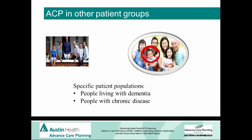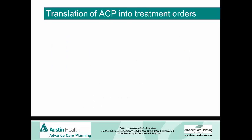We've also looked at advanced care planning in other groups — in the CALD population, and we're doing some work with Commonwealth funds at the moment in this area. There's a lot of work looking at advanced care planning in children and in specific patient populations — people living with dementia, people with chronic disease — and there is quite a bit of activity now in these areas.